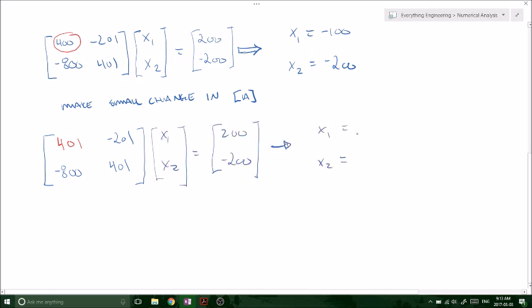Solving this out, we actually get x1 equaling 40,000 and x2 is 79,800. So we can see that is a very large change. So is it safe to say that this is an ill-conditioned system? Probably, yeah, it is.